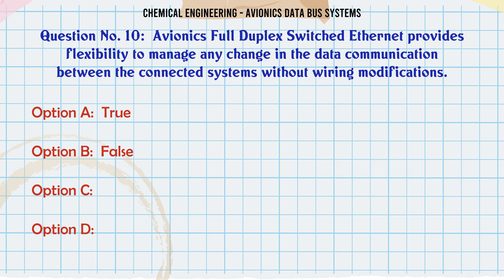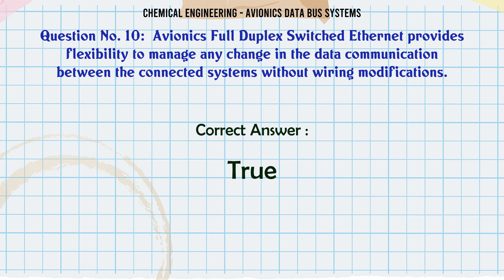Avionics full duplex switched Ethernet provides flexibility to manage any change in the data communication between the connected systems without wiring modifications. A. True, B. False. The correct answer is True.